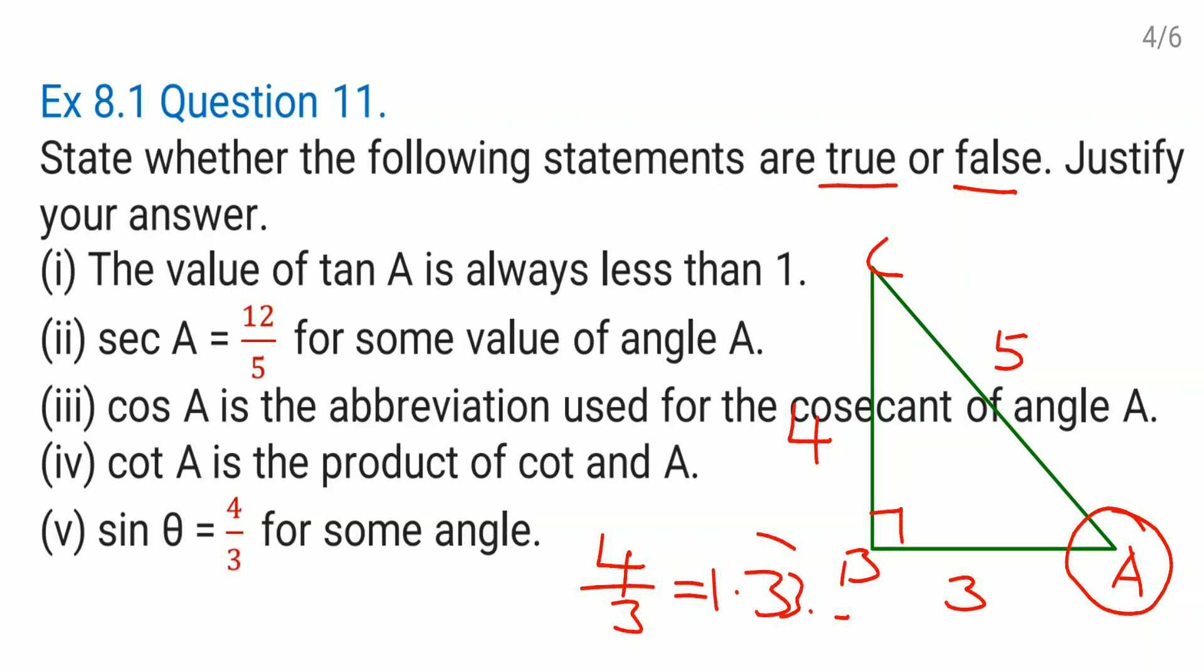Correct. Now this value is greater than 1. So whatever they said in the statement, tan A is always less than 1, which is wrong. So there is a possibility that at some time tan A will be more than 1.